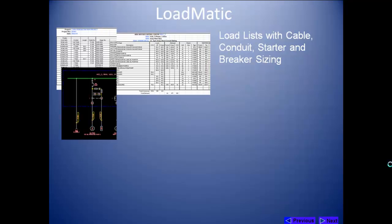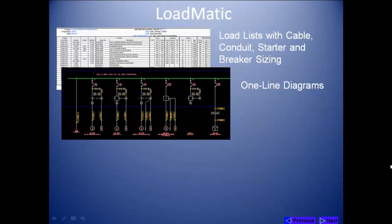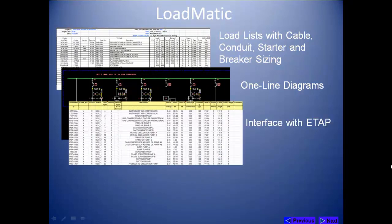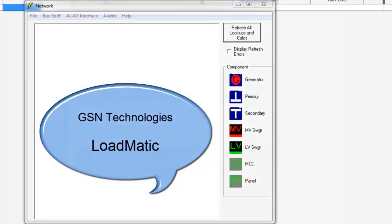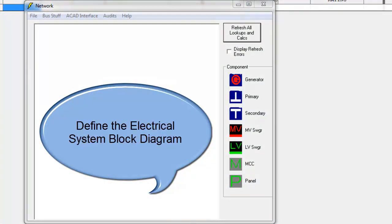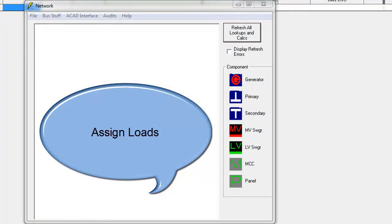Loadmatic will generate load lists. The same data will be used to generate one line diagrams and control schematics. Loadmatic also creates Excel reports compatible with other software including ETAP. Using Loadmatic, we will create a system block diagram, assign loads to the buses, then automatically generate one line diagrams and motor control schematics.